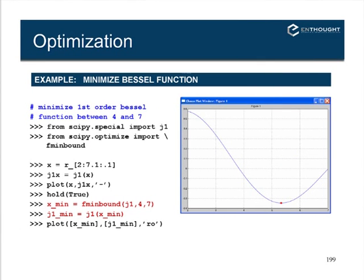For solving a nonlinear system of equations using fsolve: you define a function nonlin taking a vector x (containing x0, x1, x2) plus extra coefficients a, b, c. The function returns a list of the three equations evaluated. You then call fsolve passing the function, an initial guess, and the args=(a, b, c) parameter — whenever the optimizer calls your function it passes x plus all the extra args. The returned root, when plugged back in, gives values very close to zero.